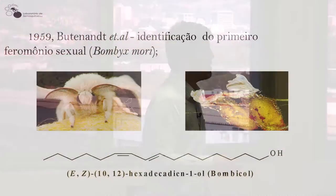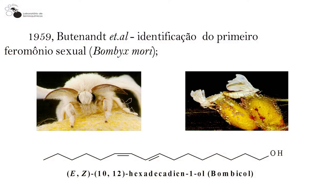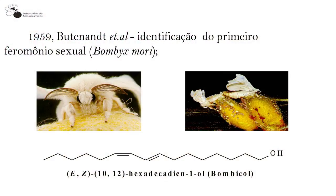O primeiro feromônio identificado foi realizado por Butenandt em 1959 — que ganhou o Prêmio Nobel de Química. Ele identificou o primeiro feromônio sexual no bicho-da-seda, Bombyx mori, a mariposa que produz a seda. A fêmea emite uma molécula química e o macho a reconhece como responsável pelo chamamento sexual. A molécula identificada é o álcool alifático (E,Z)-10,12-hexadecadienol, conhecido como bombicol — o primeiro feromônio identificado.